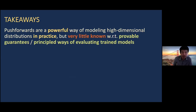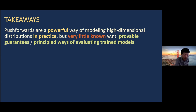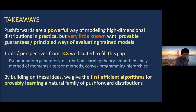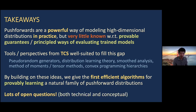To summarize the takeaways: push forwards are a very powerful way of modeling high-dimensional distributions in practice, but very little is known from a theoretical algorithmic standpoint — especially regarding provable guarantees not just for learning but even for evaluating how well trained models have done. A variety of tools from TCS are well-suited to fill this gap: pseudorandom generators, smooth analysis, method of moments, convex programming hierarchies. Building on these ideas, we give the first efficient algorithms for provably learning a natural family of push-forward distributions. There are many open questions on both technical and conceptual fronts. Thanks a lot for listening and for the invitation.